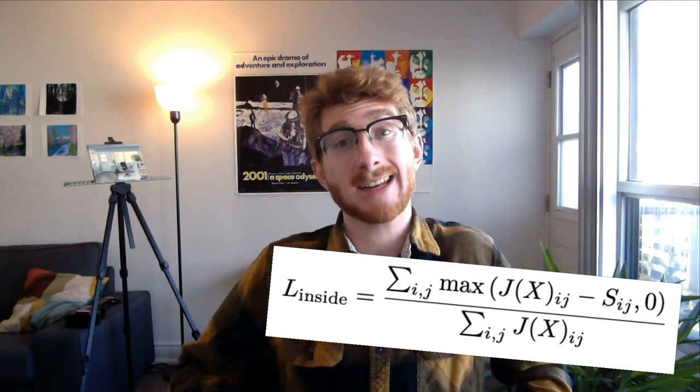And finally, from rule number four, we get a loss term that disincentivizes having any pants pixels that are outside of the silhouette. We then try to minimize the weighted sum of all of those loss terms.